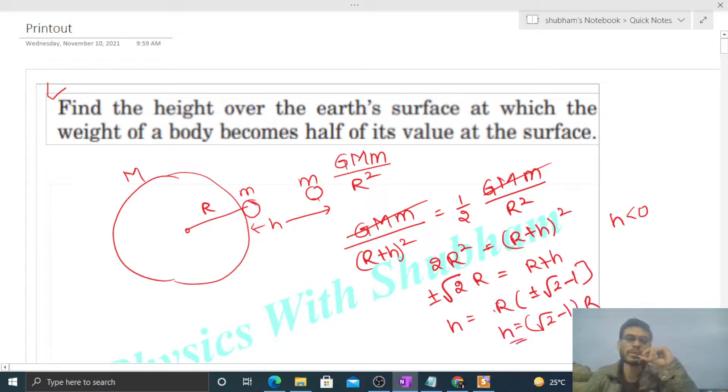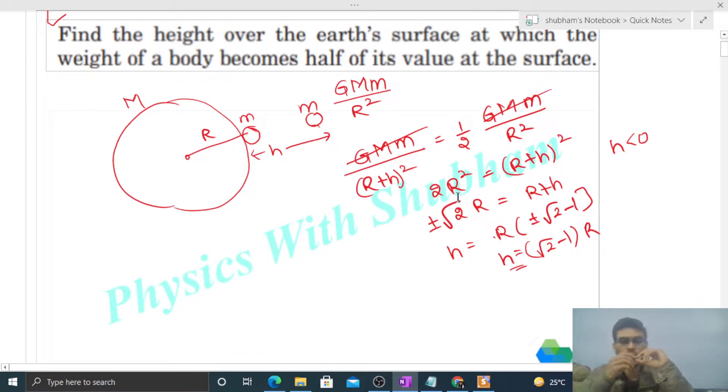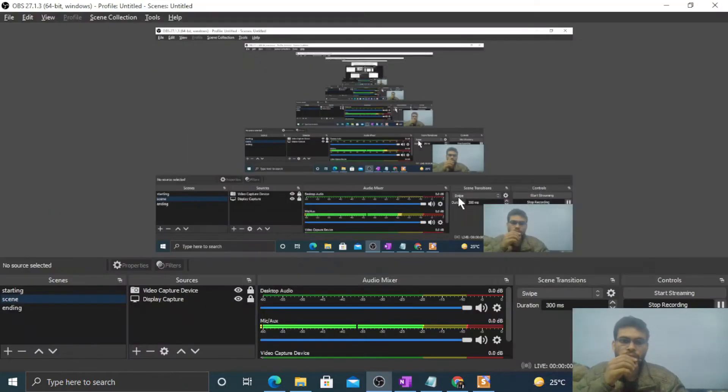This is where the gravitational force by the earth will be half the value that it has at the surface. So I think you have understood. Let me know if you still have any confusion, we can discuss further. Okay, let's keep working hard. Best of luck.